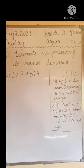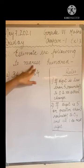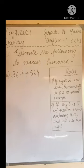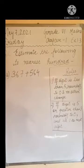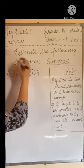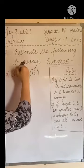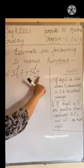Good morning everyone. Today we are going to start with question number 2 of Exercise 1.3. The question says: estimate the following to the nearest hundred. Since the given place is hundreds, we are going to look at the digit present at the 10s position — which is 1 less than the given place. Here the digit at the 10s position is 6, and here also 6. This is the 1s place and this is the 10s place.